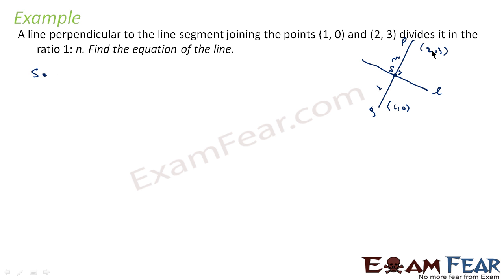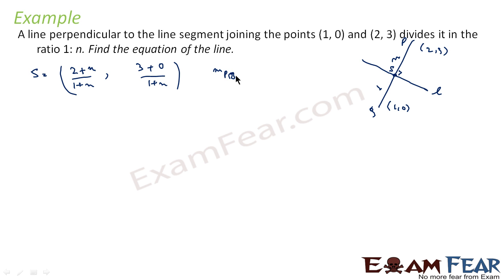So S will be: since it is divided in ratio 1 to n, using the section formula, the x-coordinate is (2×1 + 1×n) / (1+n) = (2+n)/(1+n), and the y-coordinate is (3×1 + 0×n) / (1+n) = 3/(1+n). Now the slope of PQ is (y2 − y1)/(x2 − x1) = (3 − 0)/(2 − 1) = 3. So the slope of line L is −1/3, because slope of L × slope of PQ = −1.